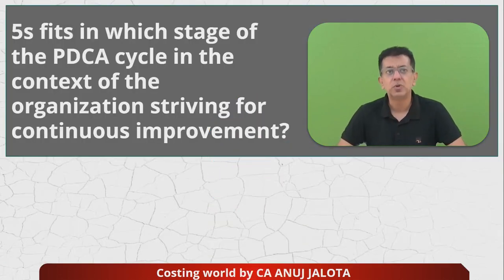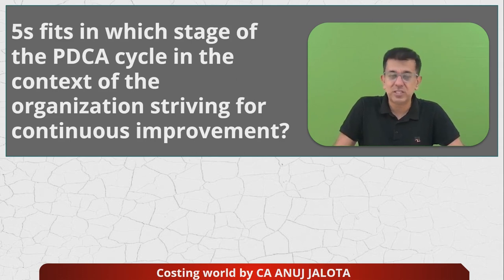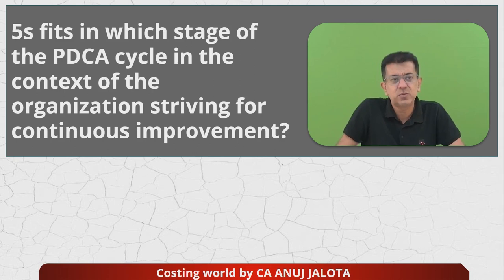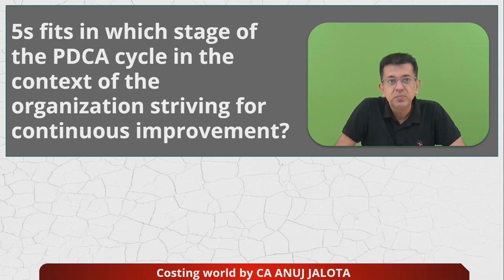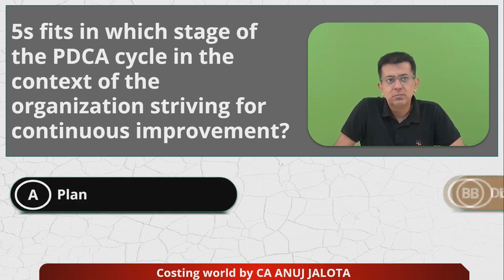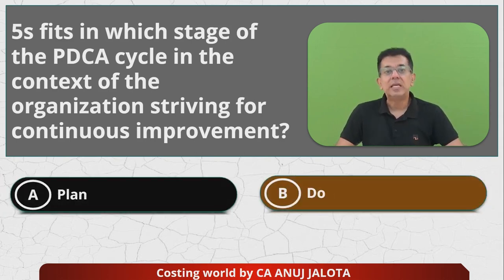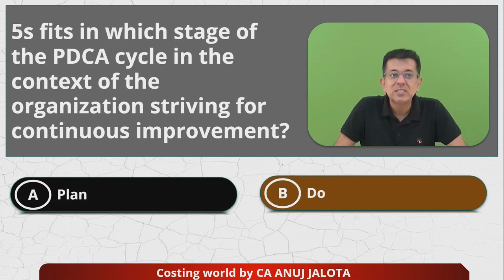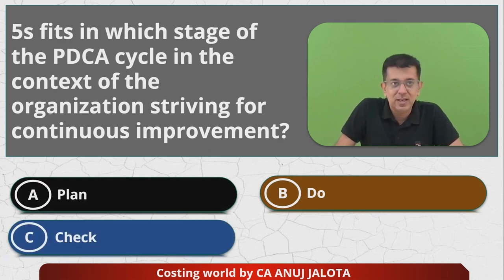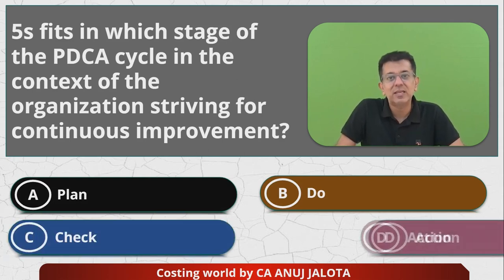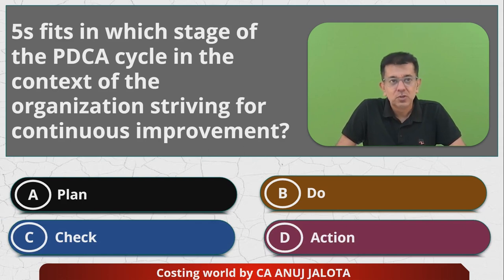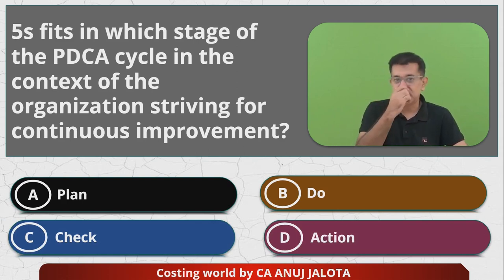So the question is: 5S fits into which stage of the PDCA cycle? In the context of an organization striving for continuous improvement. What is the PDCA cycle? P stands for Plan, D stands for Do, C stands for Check, and lastly A stands for Action. That itself is the PDCA cycle.